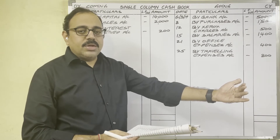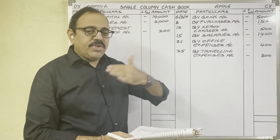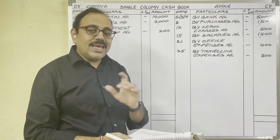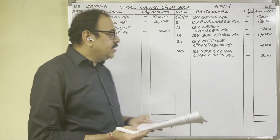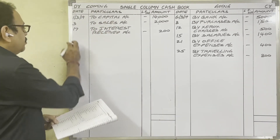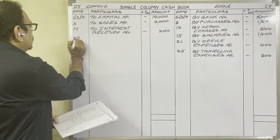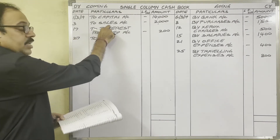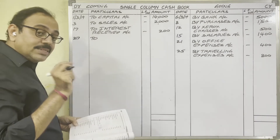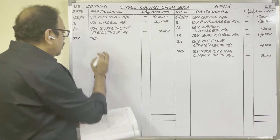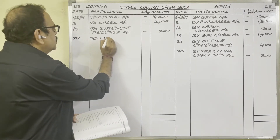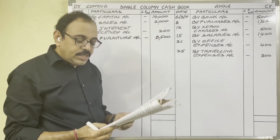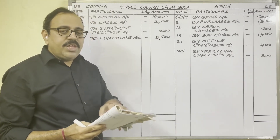27th day: sold furniture 8,500 rupees. The firm sold furniture to a customer. Since no customer name is given, this is a cash sale, so cash is coming in — debit side. Note: if goods are sold, write 'Sales', but if a fixed asset is sold, write the asset name. So write: To Furniture account, 8,500 rupees.